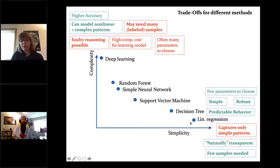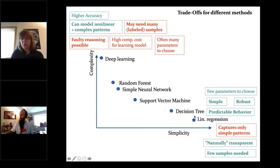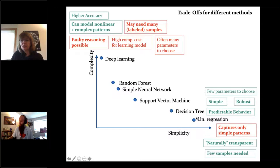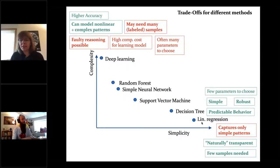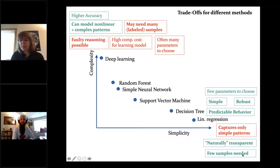Simpler methods like linear regression and decision trees have many advantages: very few parameters to learn, very simple, very robust, predictable behavior. If you use a linear regression model, you can predict easily what's going to come out. They can only capture simple patterns, but they're naturally transparent and usually only need a few training samples because there are only a few parameters to train.